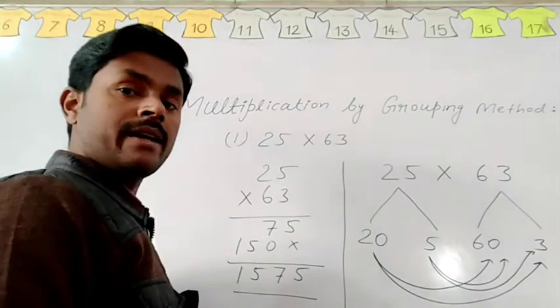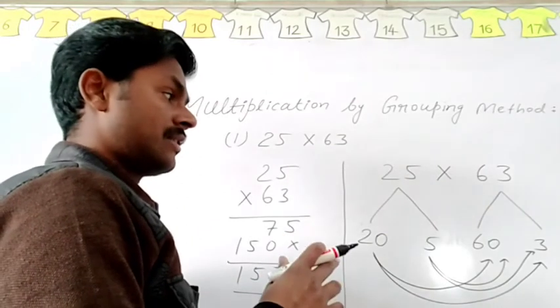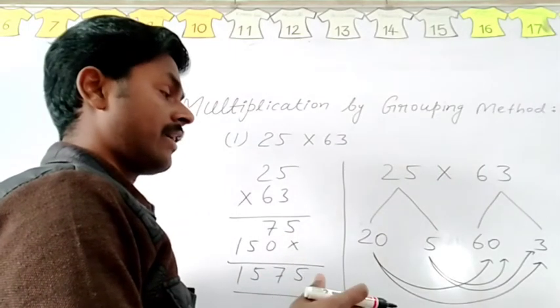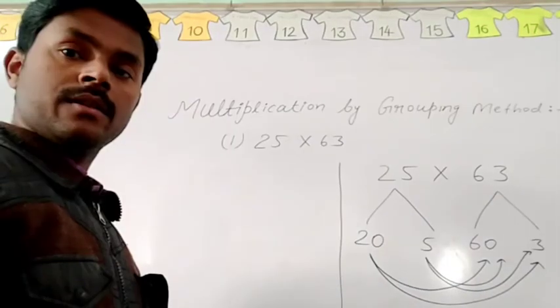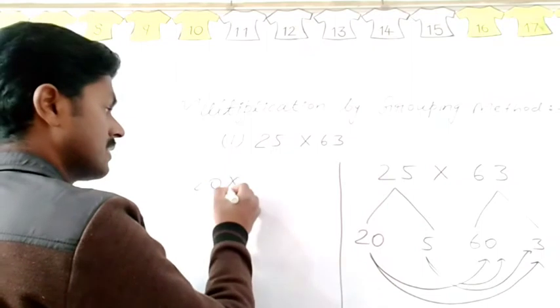Now multiply 20 and 60, 5 and 60, 20 and 3, and 5 and 3. Now I am going to multiply 20 and 60.